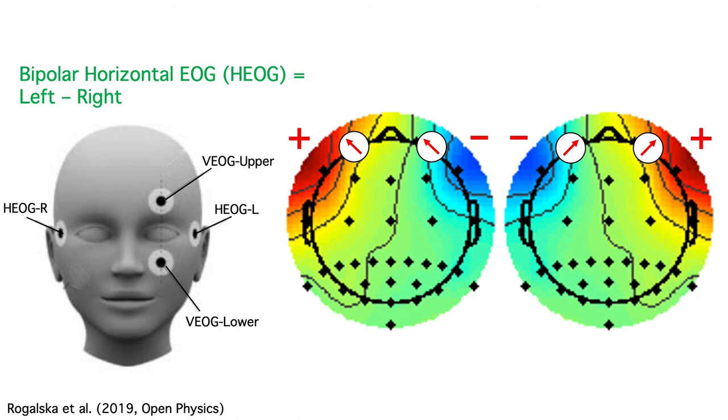If we make a bipolar HEOG signal by taking HEOG left minus HEOG right, we again get a doubling of the signal and we eliminate most brain activity.